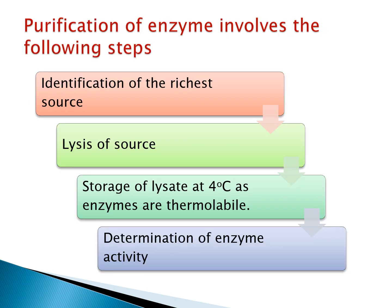During the purification of enzymes, the following steps are followed: First, identify the richest source of the enzyme (microbial, plant, or animal source). Then the tissue is taken and the cells are lysed. Once you get the lysate — which is a very crude one — it is stored at 4 degrees centigrade because enzymes are thermolabile and get easily denatured. This crude extract is then checked for enzyme activity.